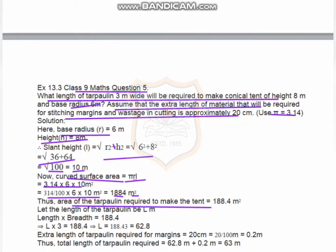The area of tarpaulin required to make the tent is 188.4 meters square. The length of tarpaulin is l meters and breadth is 3 meters, so l × 3 = 188.4, giving l = 188.4/3 = 62.8 meters. The extra length for margin is 20 centimeters = 0.2 meters. So the total length of tarpaulin required is 62.8 + 0.2 = 63 meters.